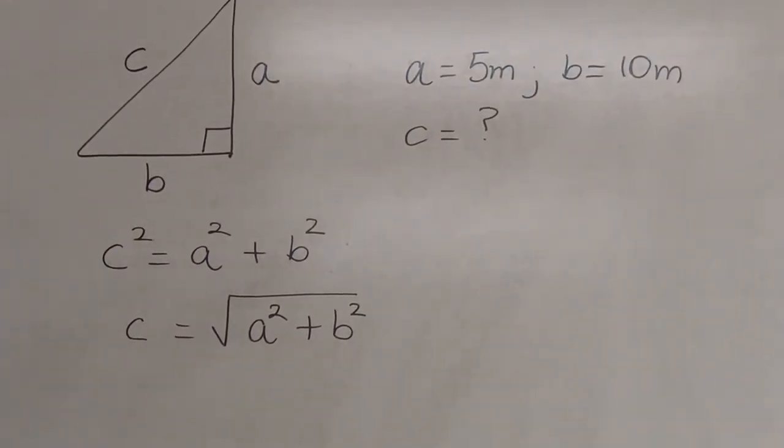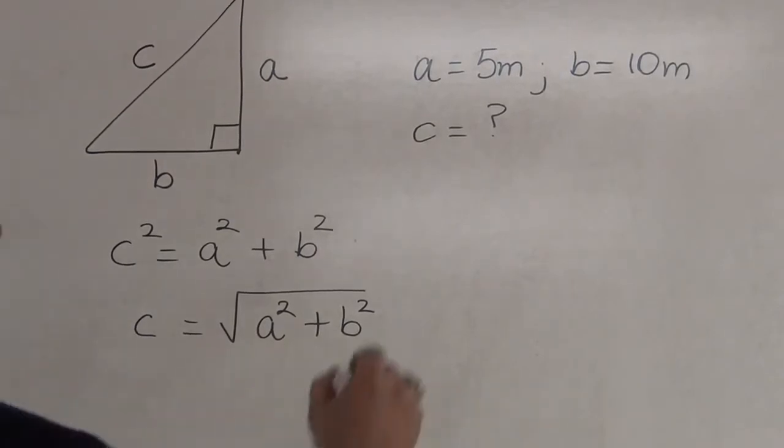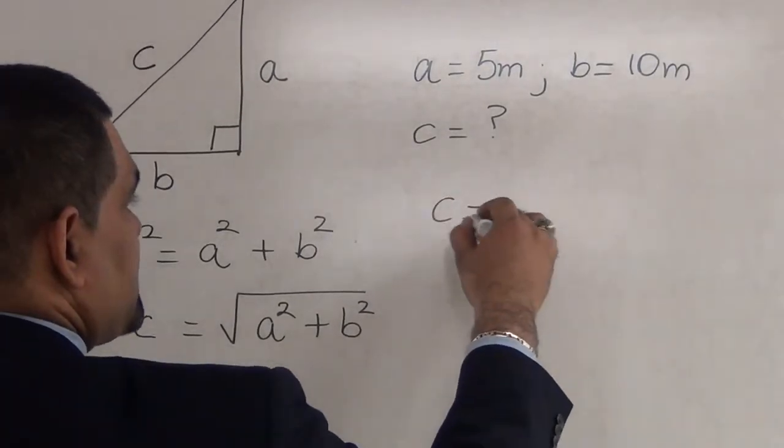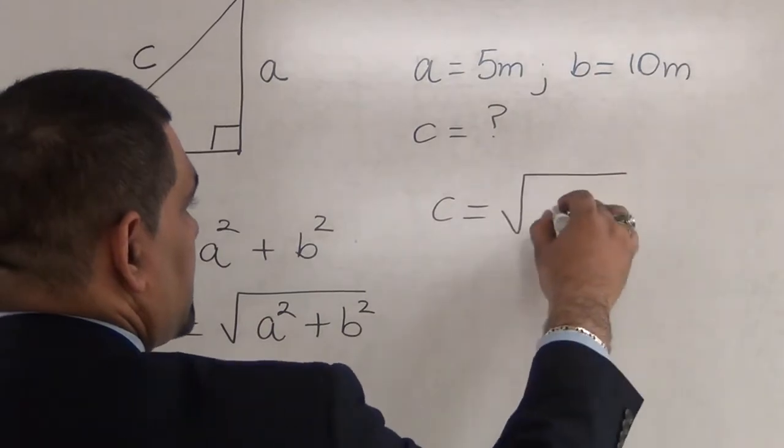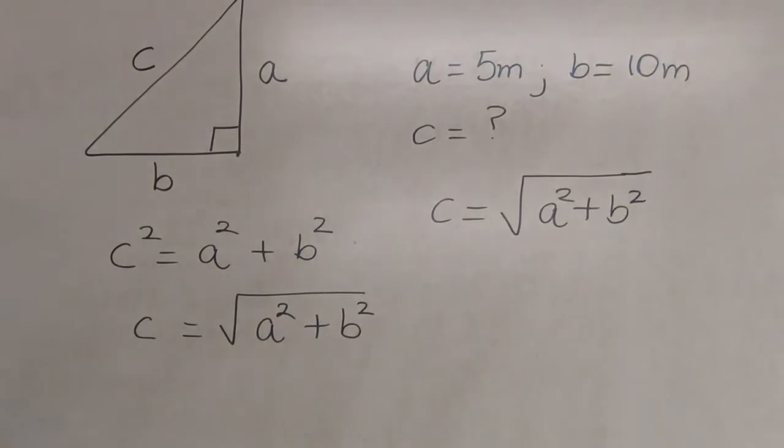Now, from the formula, as I mentioned before, C is equal to the square root of A squared plus B squared. We know we write the formula. C is equal to the square root of A squared plus B squared. And remember, we give A a value and B a value. So, now we go and substitute the value of A and the value of B.